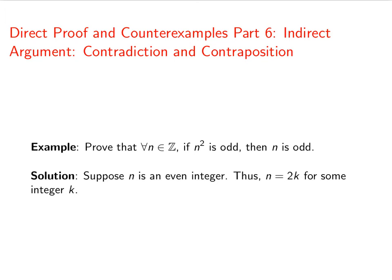Now let's see if we can prove that n squared is even. So n squared is equal to 2k quantity squared, and that's equal to 2 times 2k squared, and that makes n squared even.